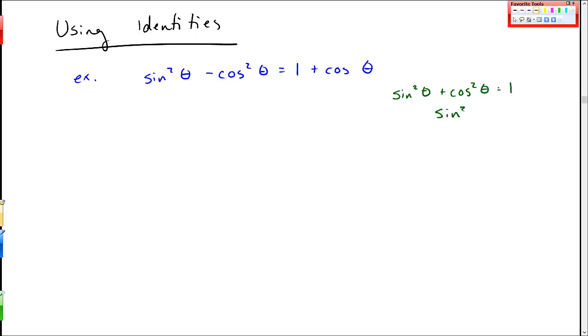But I do have that sine squared theta plus cosine squared theta is 1. So if I wanted to just change everything into cosines, I could do that. Sine squared is 1 minus cosine squared, so I'm going to make that substitution here.